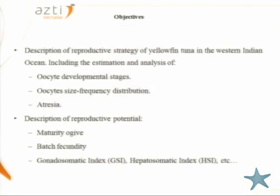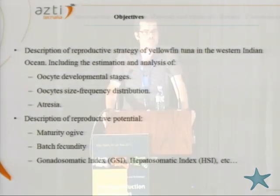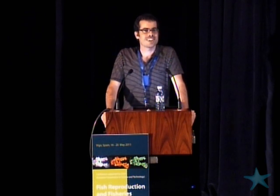There are two main objectives. The first is to describe the reproductive strategy in order to define the type of fecundity; therefore, oocyte development and ovarian organization were analyzed. The second objective is to describe some reproductive traits that define the reproductive potential of the species, focusing on maturity, fecundity, and condition indices such as gonadosomatic index, hepatosomatic index, and condition factor.